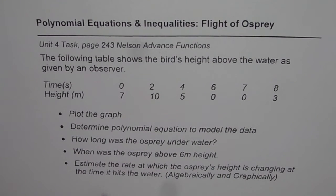There are more questions in between, so I have taken up just a few important ones which I thought you may need help with. When was the osprey above 6m height? We can do this from the equation which we developed in part 2. And then, estimate the rate at which the osprey's height is changing at the time it hits the water. We are going to do it both algebraically and graphically.